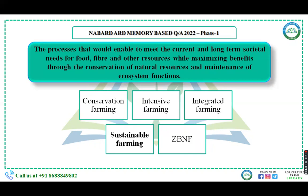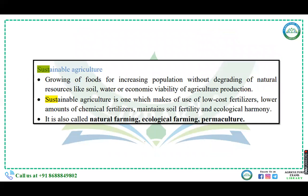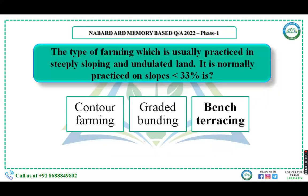The process that enables meeting current and long-term social needs for food, fiber, and other resources while maximizing benefits through conservation of natural resources and maintenance of ecosystem functions — the answer is sustainable farming. Sustainable agriculture makes use of low-cost fertilizers, lower amounts of chemical fertilizers, maintenance of soil fertility, and ecological harmony. It is also known as natural farming, ecological farming, or permaculture.